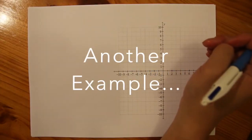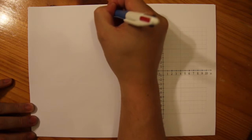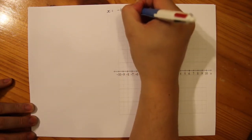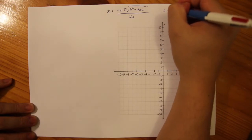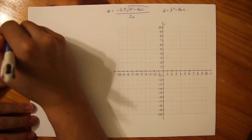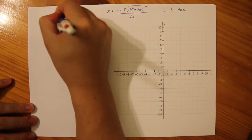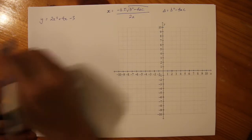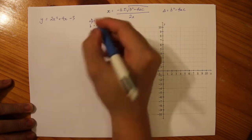Here's the last example of sketching parabolas using the quadratic formula. I'll write the quadratic formula up at the top. Remember the discriminant is a good way to check. We're going to use the example Y equals 2X squared plus 4X minus 3 and sketch it on the Cartesian plane. Our values are: A is 2, B is 4, and C is minus 3.